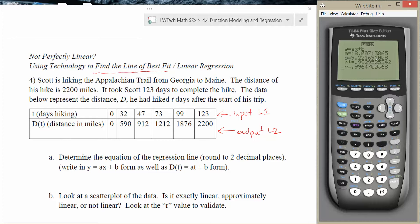Part a here asks us to determine the regression line rounding to two decimal places and write it in y equals ax plus b form. All we want to do is just fill in the values for a and b that our calculator gave us. So I'll have y equals 18.01x plus our b value, which was 9.22. So this equation here is our best linear regression line.